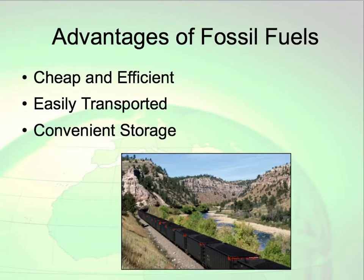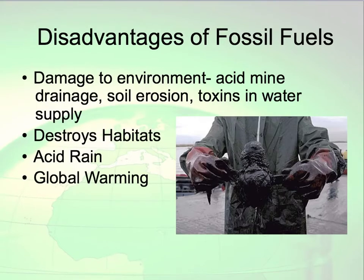Here is where you need your chart for resources. Some advantages of using fossil fuels: they are cheap and efficient, easily transported by way of terrain, and can be stored relatively easily. Disadvantages include damage to the environment — acid mine drainage, soil erosion, toxins — they can destroy habitats and cause acid rain. Also, the burning of fossil fuels contributes to global warming.